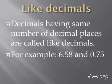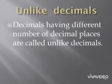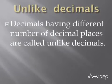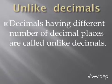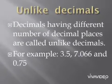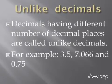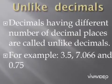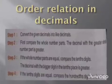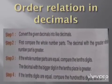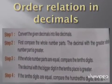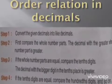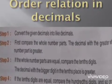Unlike decimals are decimals having different number of decimal places. For example, 3.5, 7.066, and 0.75. Now, order relation in decimals: first, convert the given decimals into like decimals.